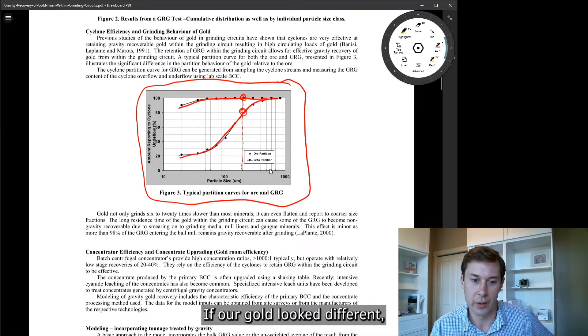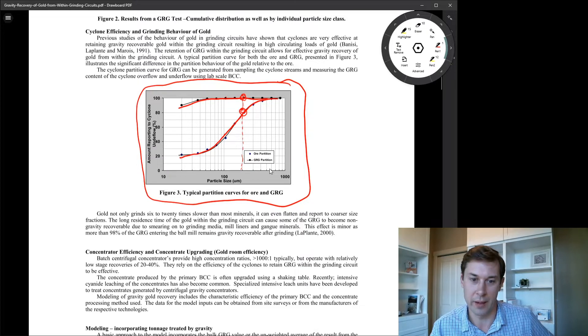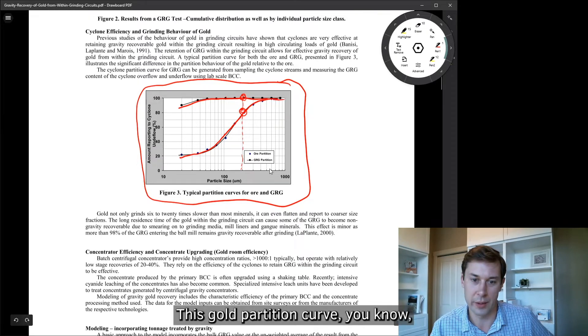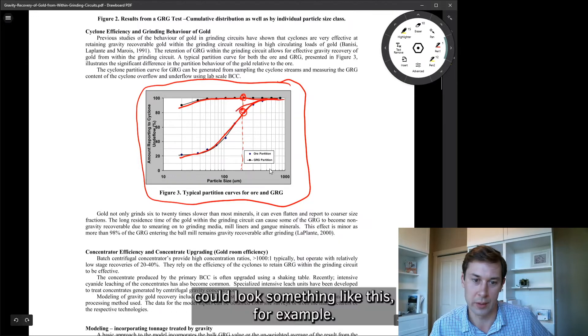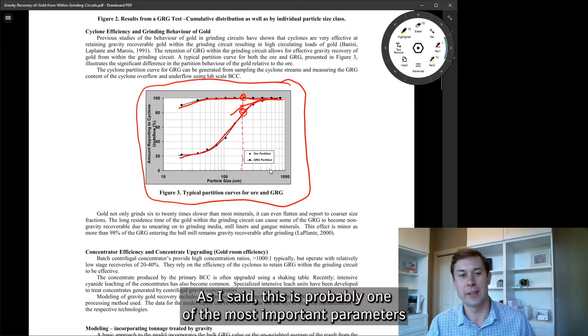If our gold looked different, let's say it was all very, very, very fine, this gold partition curve could look something like this, for example. And now, hey, now we're only retaining 85 or 90% of the gold in the grinding circuit.